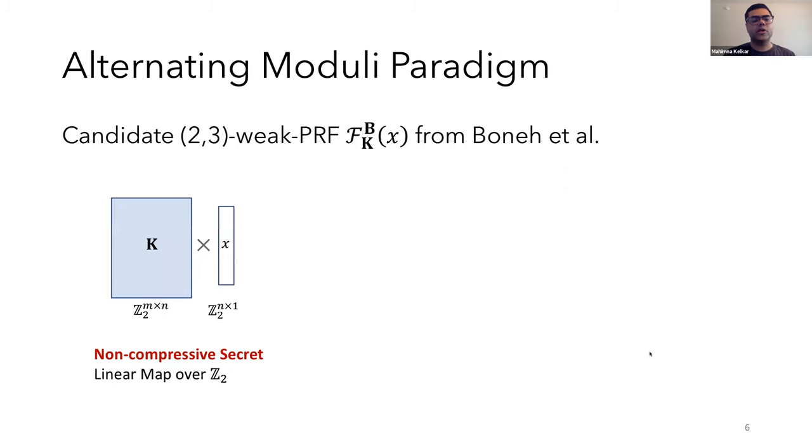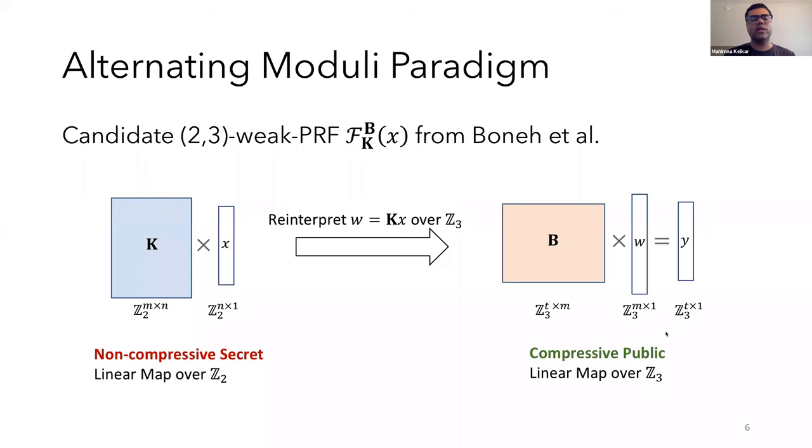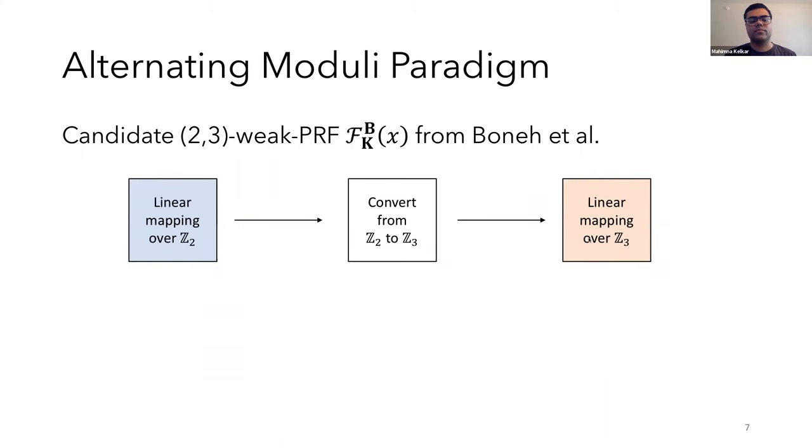So for the construction, the key is a Z2 matrix of size m by n. The input is an n-bit vector, and the output is t Z3 elements. So now the candidate works as follows. First, it multiplies the secret key matrix with the input. And this is a non-compressive secret linear map over Z2. Next, w equals kx, which is the Z2 vector, is reinterpreted as a 0-1 vector over Z3. And finally, this is multiplied with a public matrix B over Z3 to get the output y.